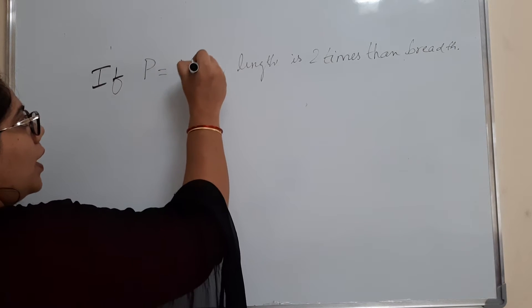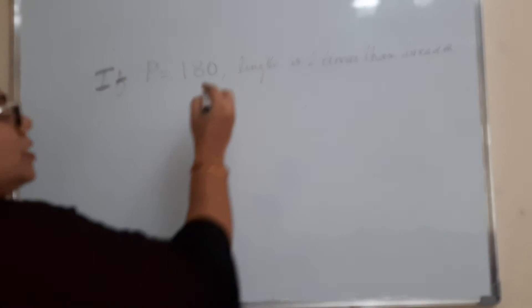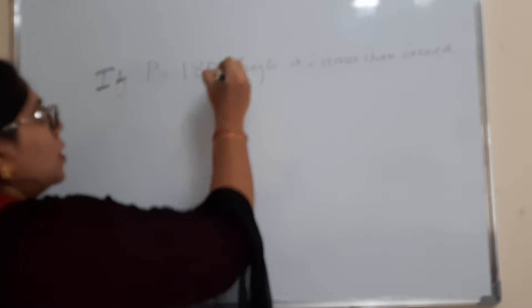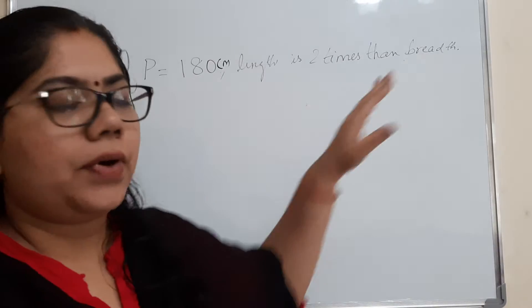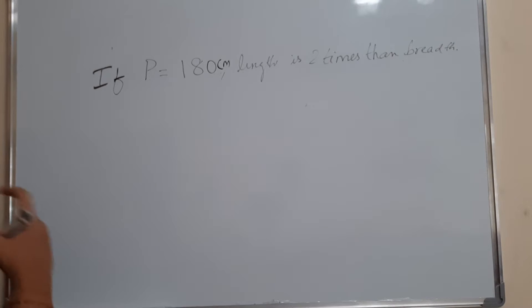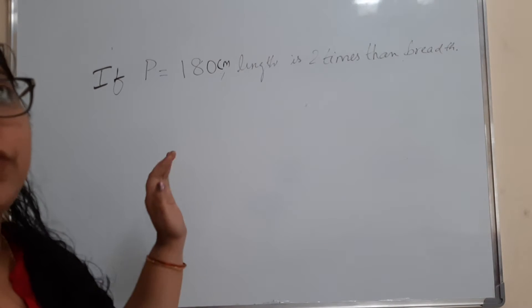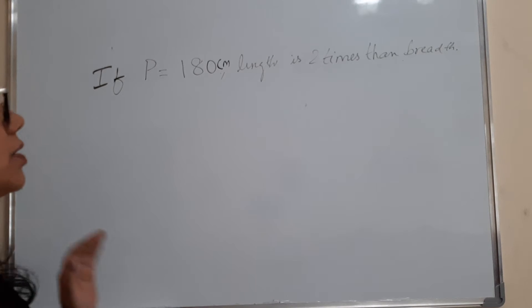So our first question: perimeter is equal to 180 centimeters, length is 2 times the breadth. Find the length and breadth of the given rectangle. This is the question.